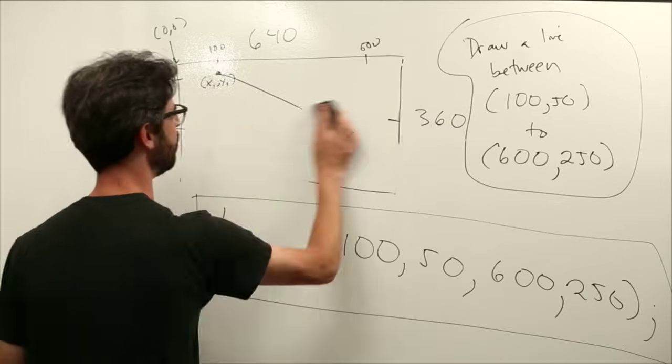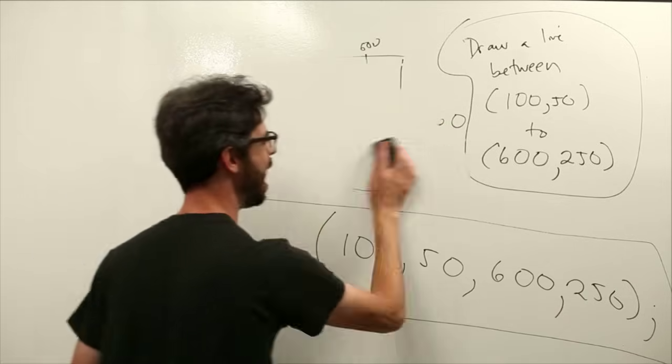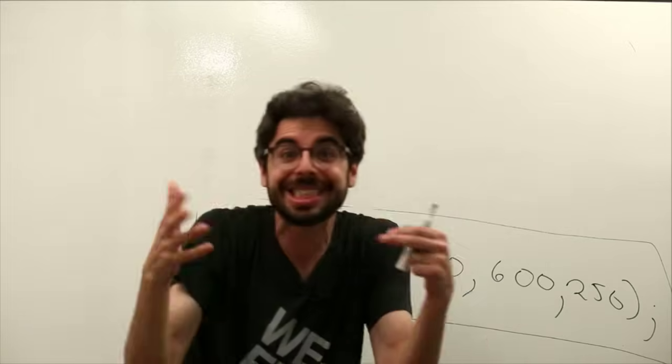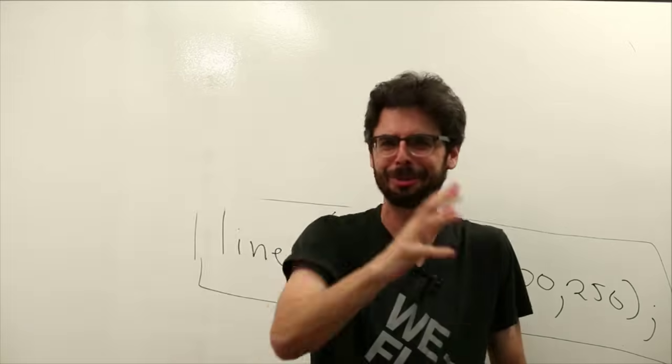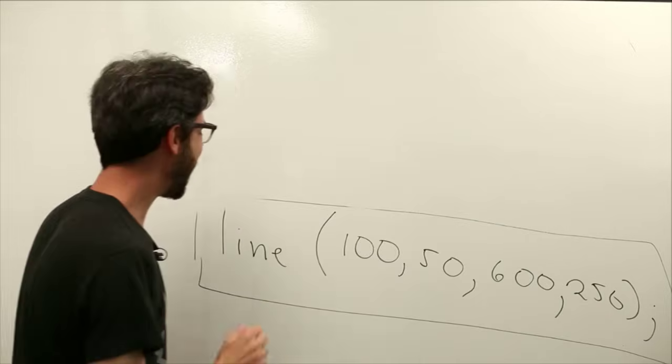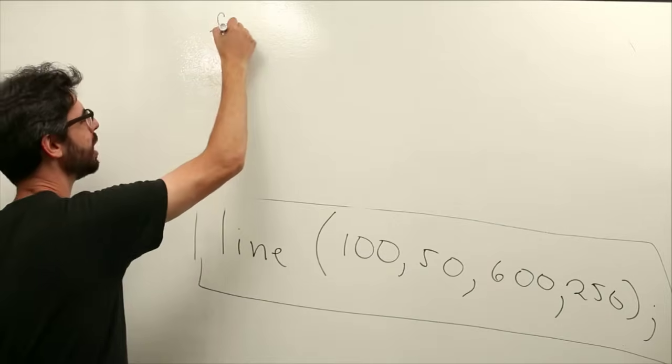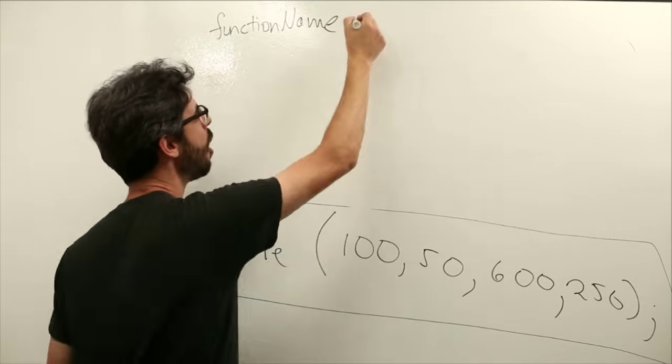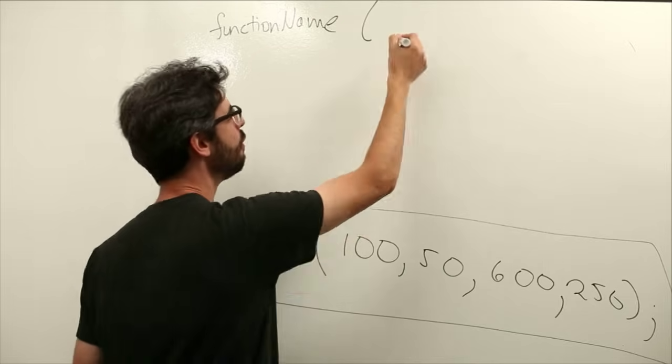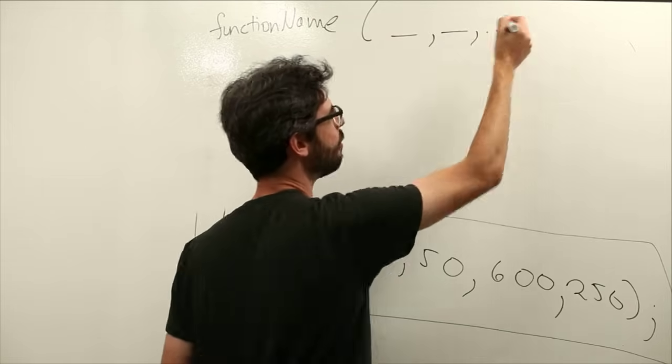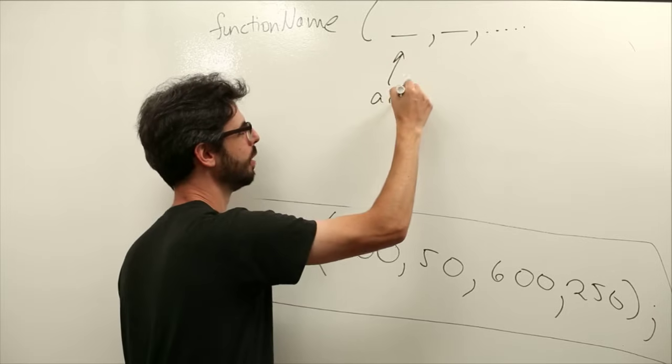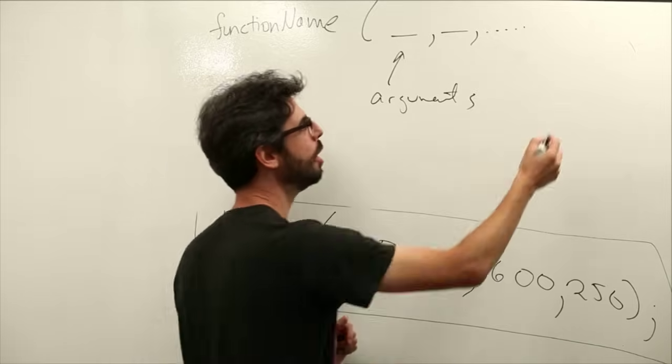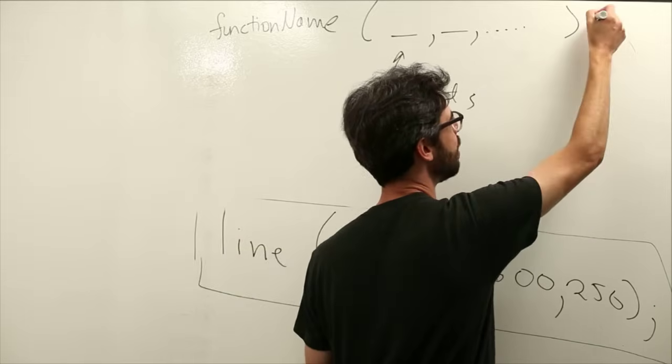This is our first line of code that we are ever writing in our entire lives, for dramatic effect. Everything that we're going to write has this format. It has what we're going to say is a function name, followed by a parentheses, followed by some set of arguments which are values separated by commas, ending with a parentheses and ending with a semicolon.